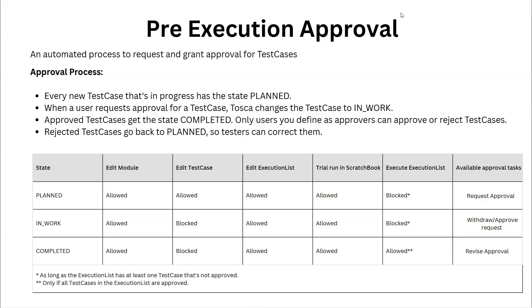What is pre-execution approval? We know that it is best practice to always review test cases before you actually merge them into your main workspace. Many teams working regularly to build test cases in Tosca need them reviewed before inclusion, because without review or approval, during execution you might face problems due to unnecessary changes, or it might be difficult to track changes happening in your test cases. To avoid all this, Tosca provides an automated process called pre-execution approval to request and grant approvals for your test cases.